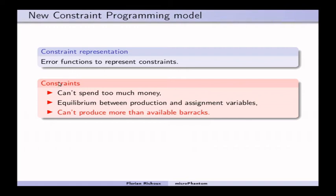I kept the two original constraints from PO Adaptive and I add a third one preventing me to try to produce more units than available barracks. So, if I just have two, three barracks, I cannot produce more than two units at the same time.